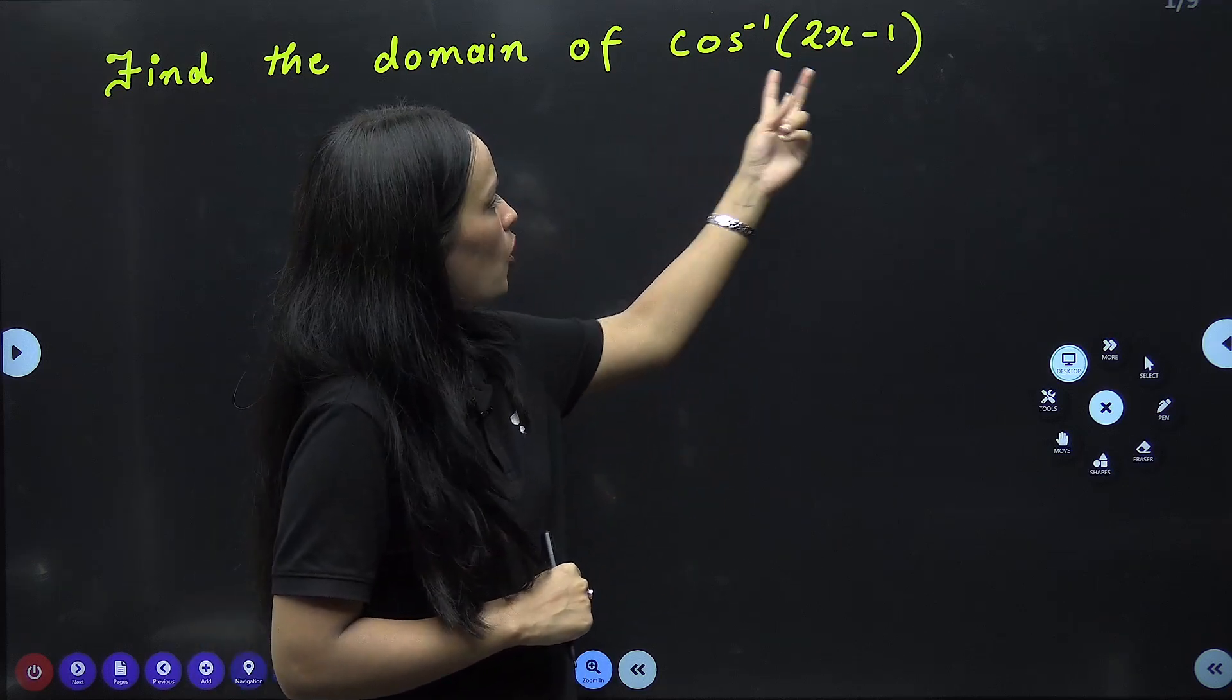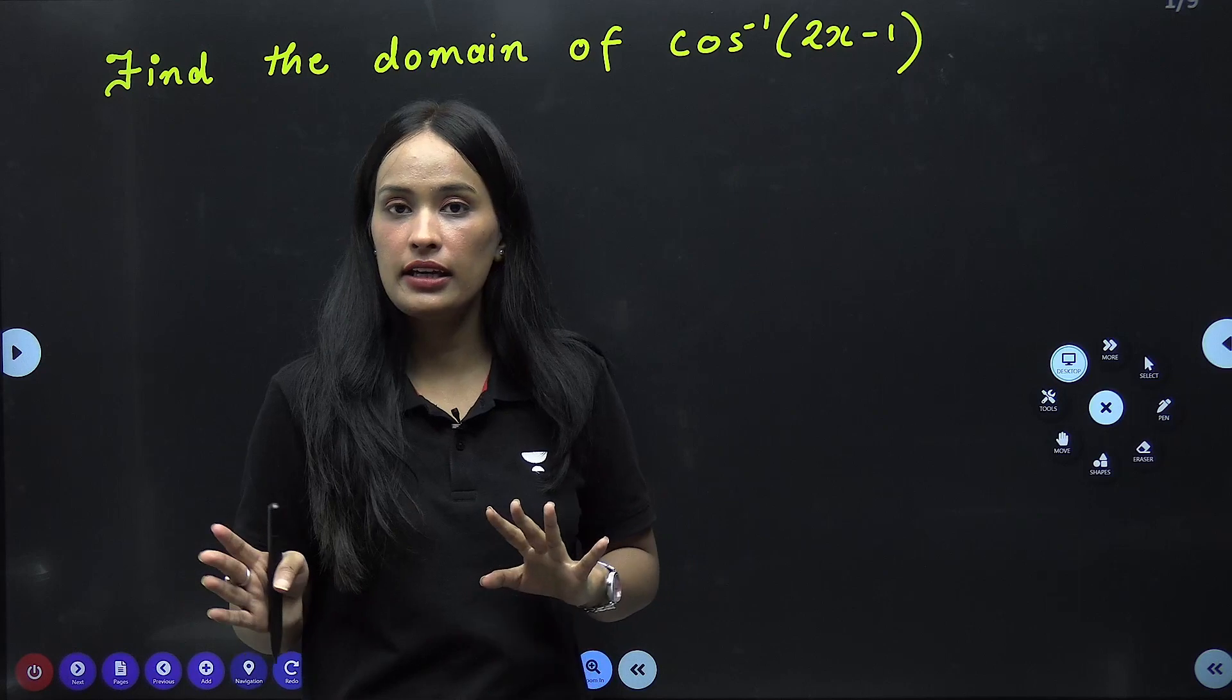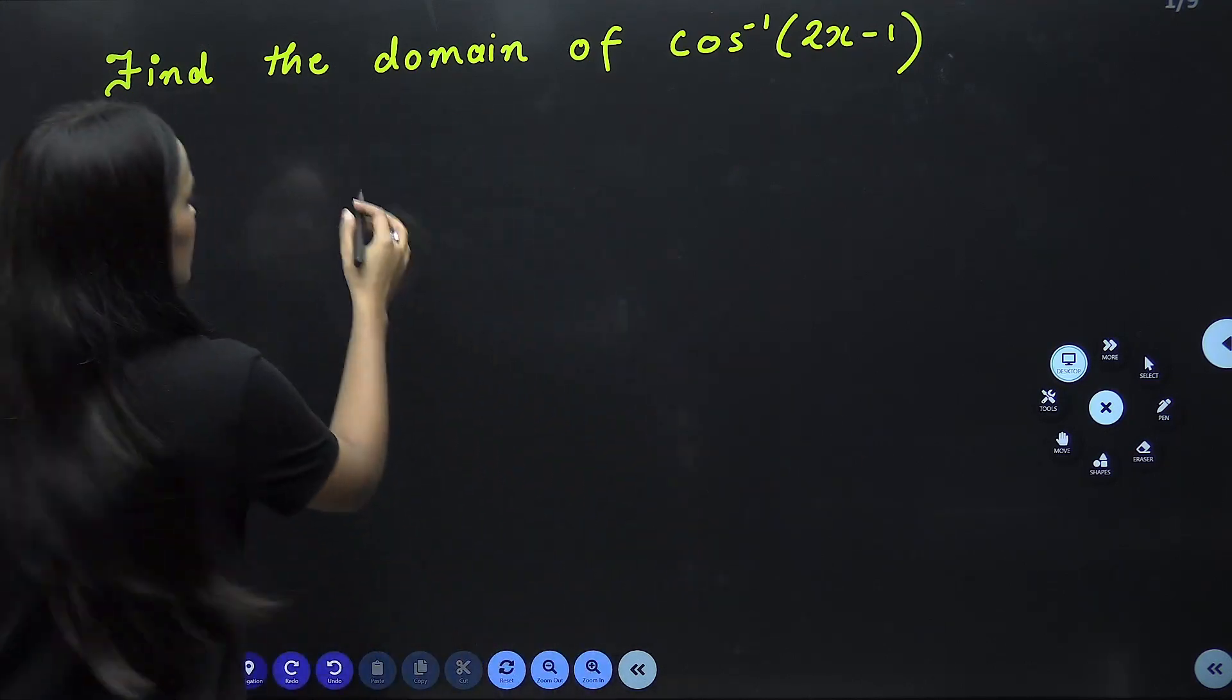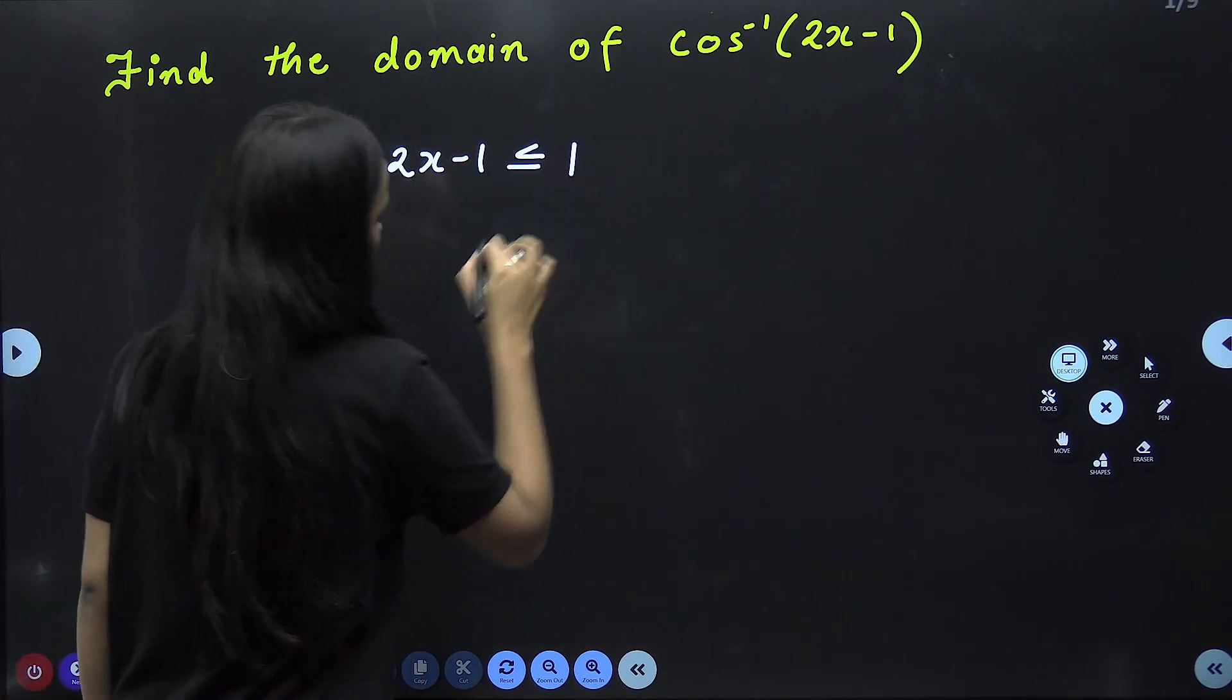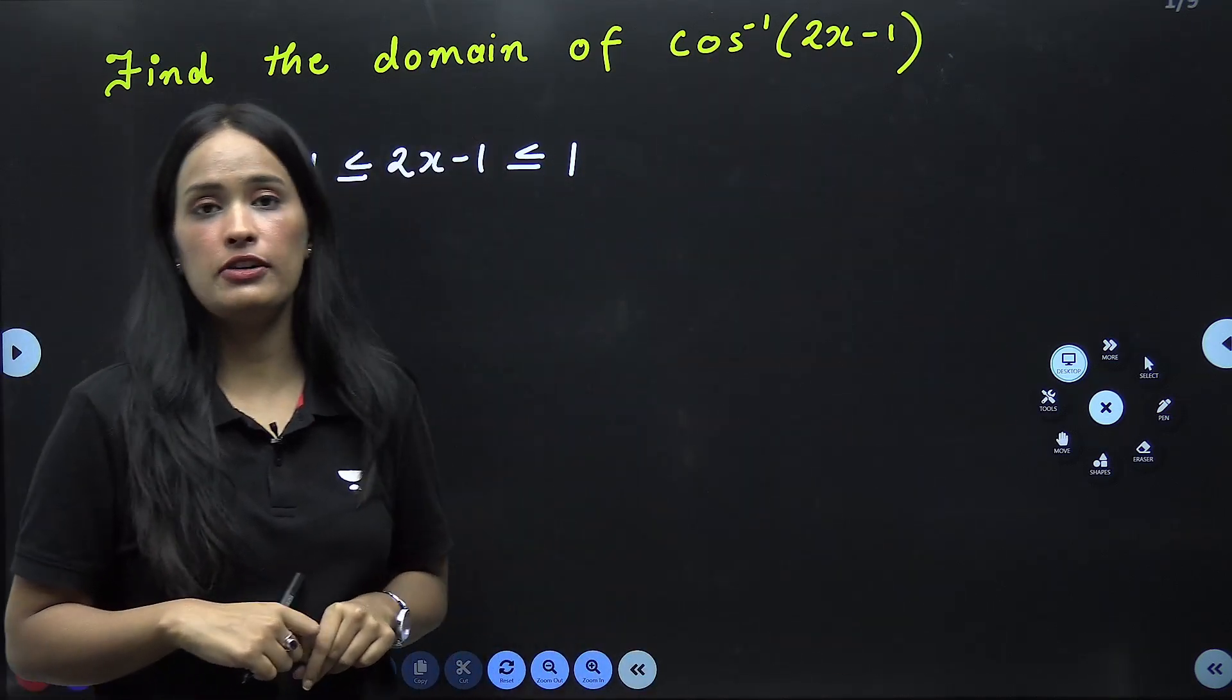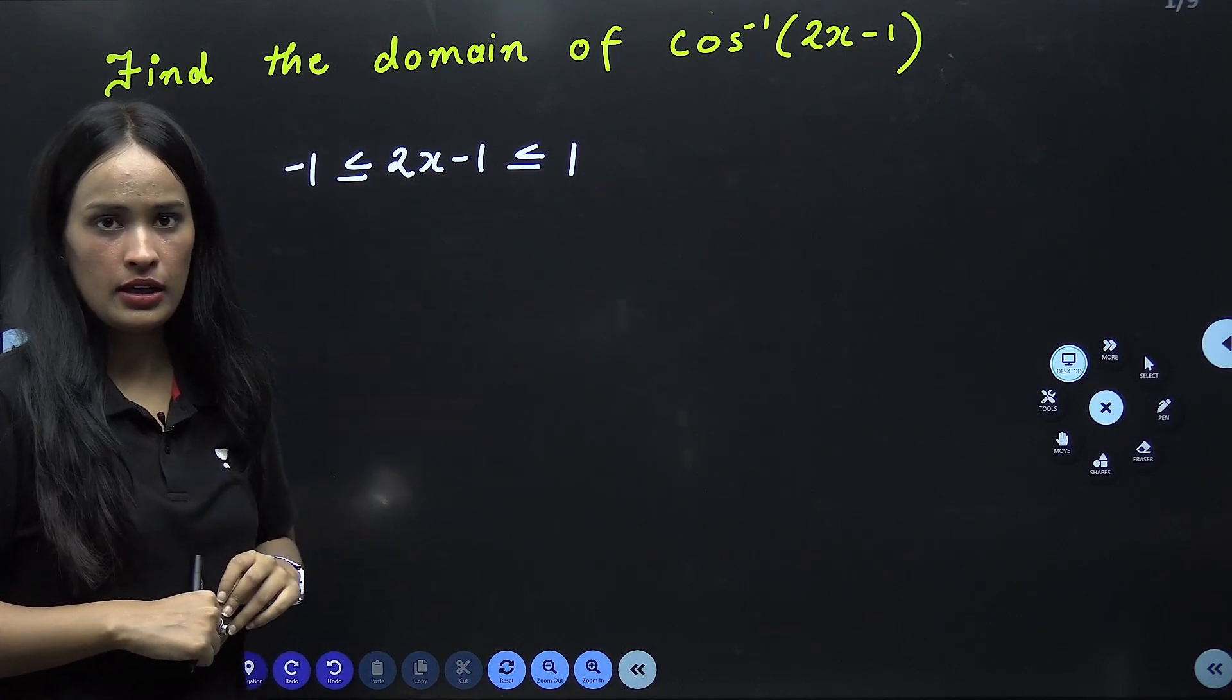Now, in this cos inverse, whatever is written inside, what will it be? It will be minus 1 to 1. Okay? So, you will write here that 2x-1 will be greater than or equal to minus 1, but less than or equal to 1. Why? Because the domain of cos inverse is closed interval minus 1 to 1. So, this thing will be under it.